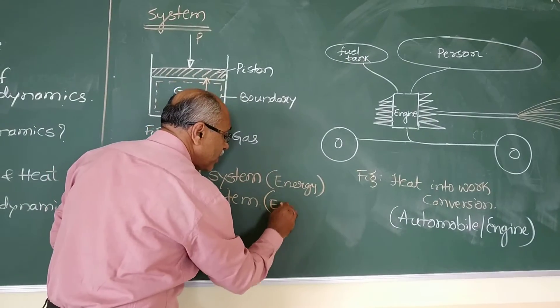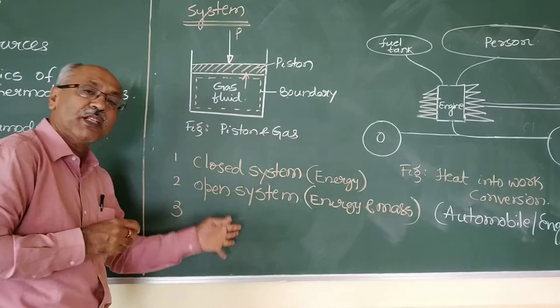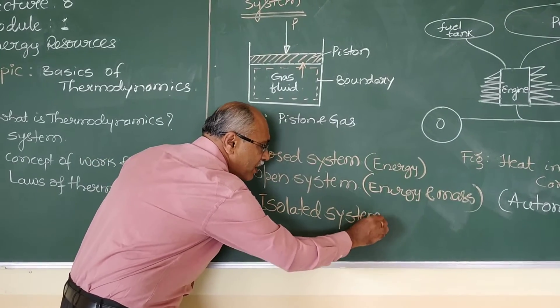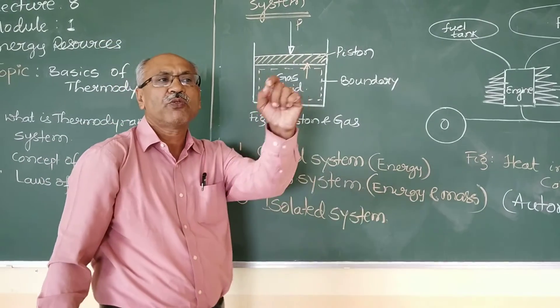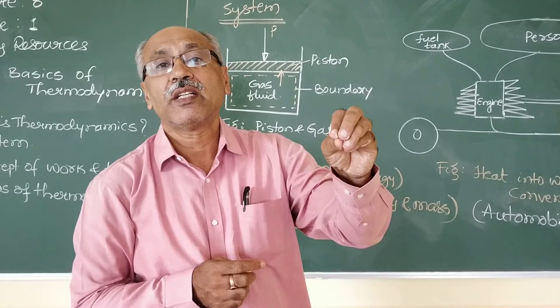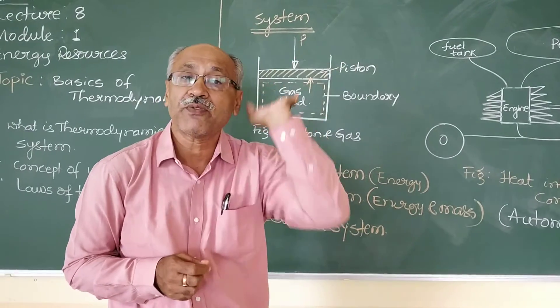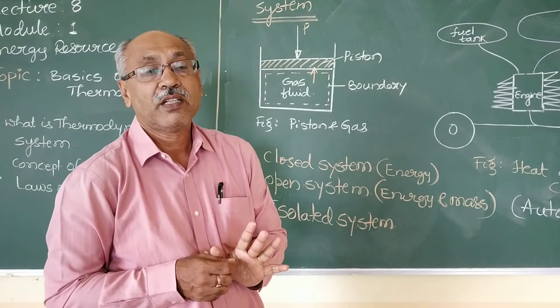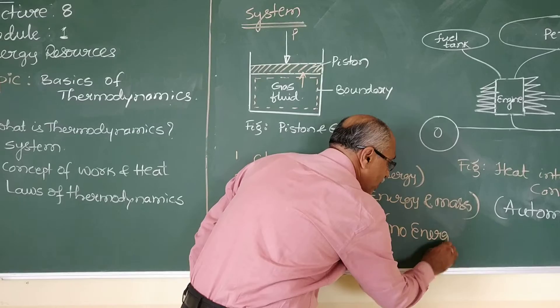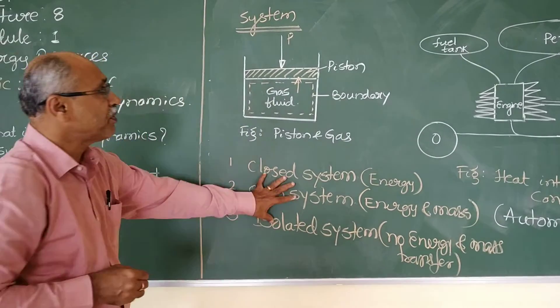Then obviously, what should be the third? Third system is isolated system. My dear students, let me give you an example. Take a thermos flask. It maintains the hotness or coldness of the fluid, whatever that is filled in. Neither energy nor mass transfer takes place. So that type of system is called as isolated system. That means no energy nor mass transfer takes place. So these are the three types of thermodynamic system.